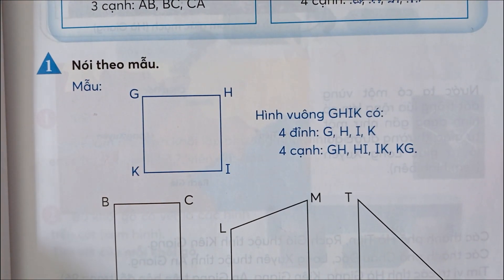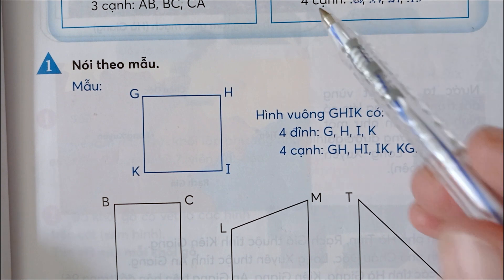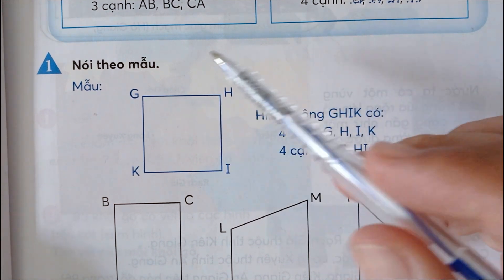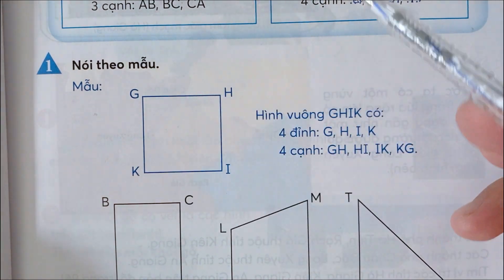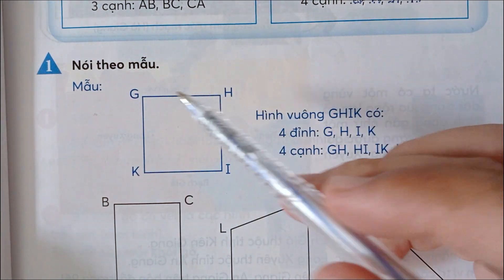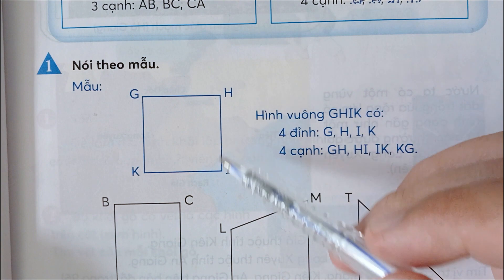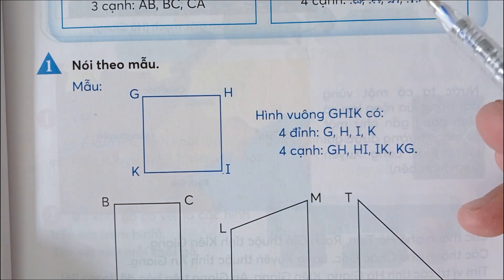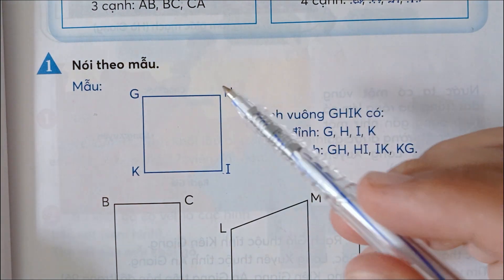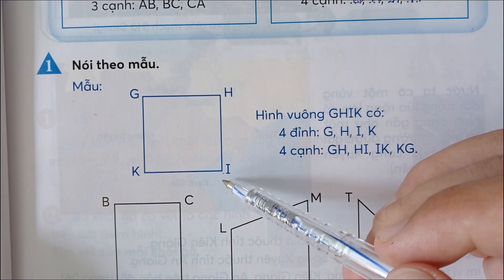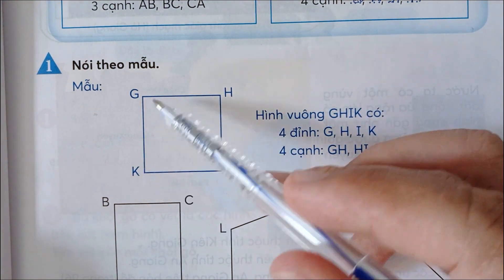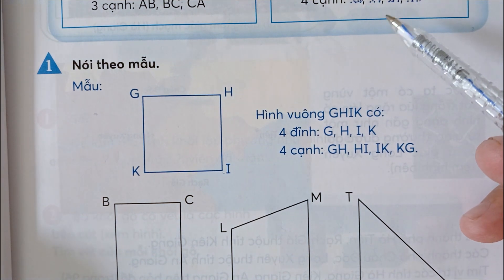Nói theo mẫu. Hình tứ giác G, H, I, K có 4 đỉnh là G, H, I, K. Có 4 cạnh là GH, HI, IK, KG.